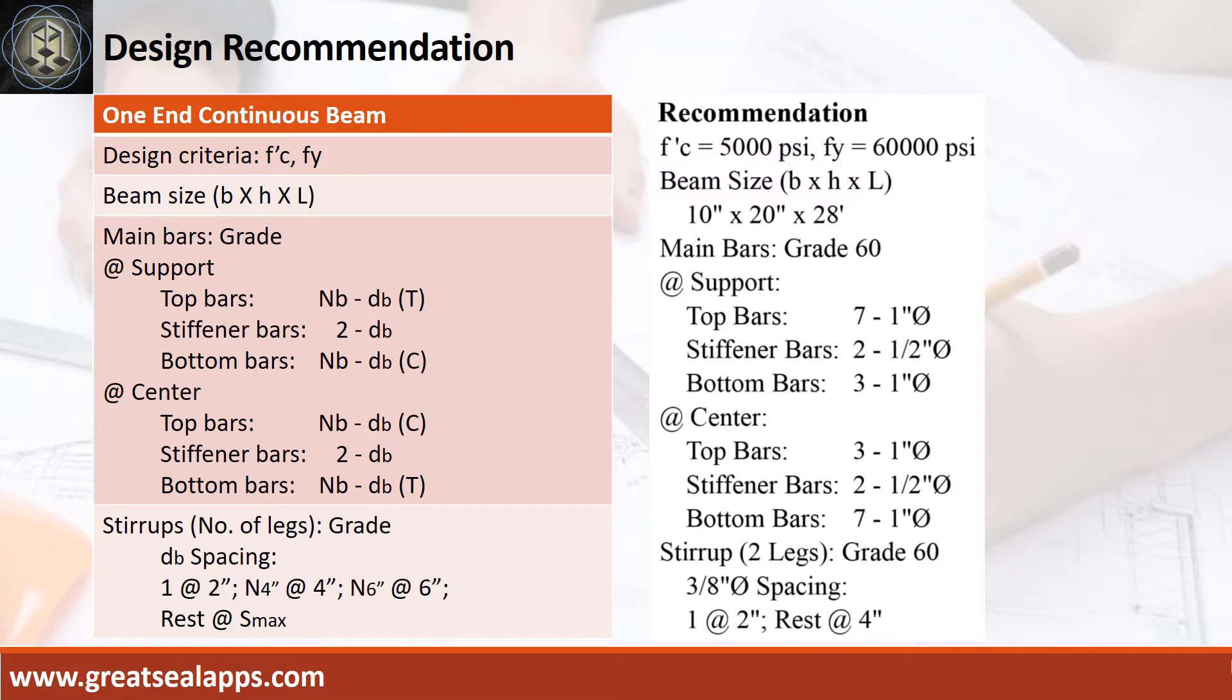Design recommendation as follows. Top bars: 3 pieces, 1 inch diameter. Stiffener bars: 2 pieces, 1.5 inch diameter. Bottom bars: 7 pieces, 1 inch diameter. Stirrup of 2 legs of grade 60, 3/8 inch diameter bar spacing, 1 at 2 inches, rest at 4 inches.